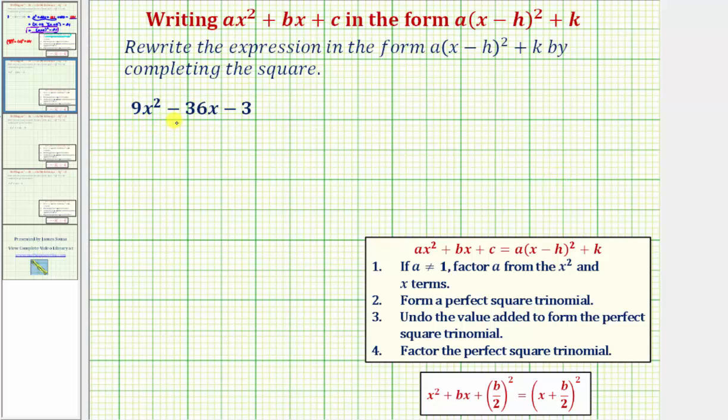We want to write the expression 9x² - 36x - 3 in the form a times the quantity x minus h squared plus k.